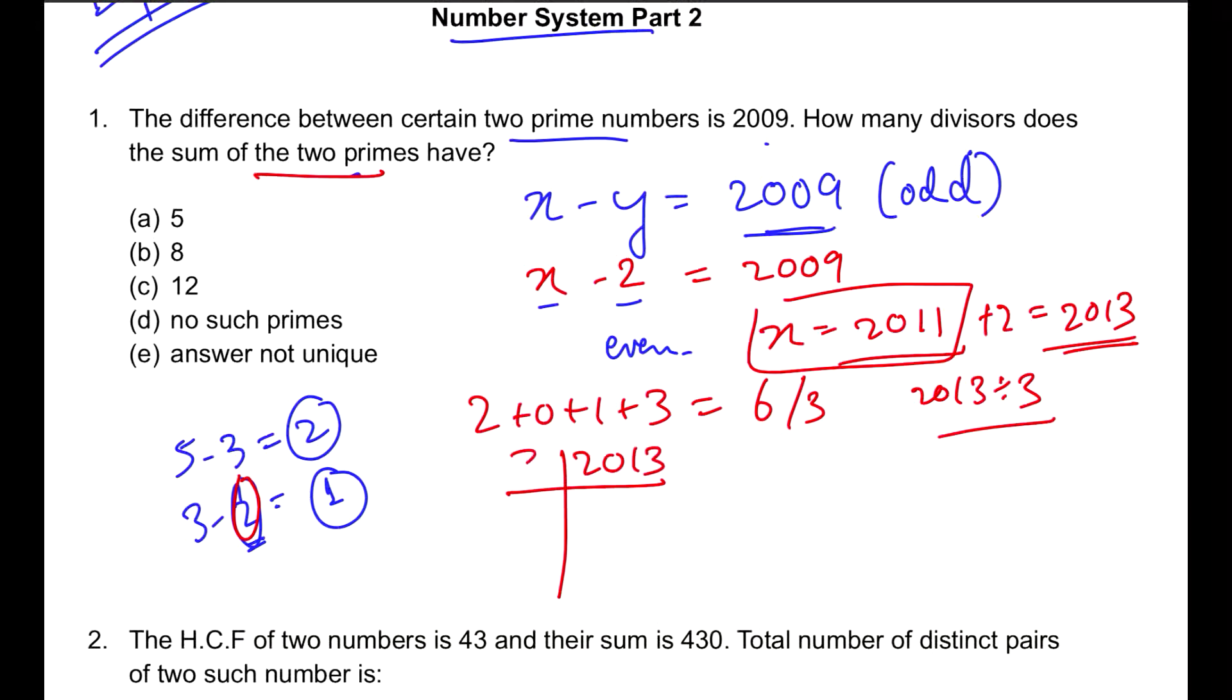Please do the prime factorization of 2013 with me. 2013 divided by 3 gives 671. I can further break it down: 11 times 6 is 66, then with a 1 here, we get 61, which is a prime number. So I'll stop right away.